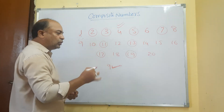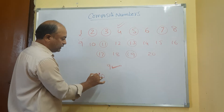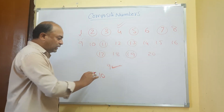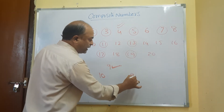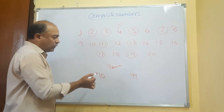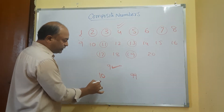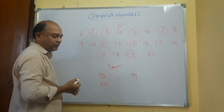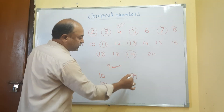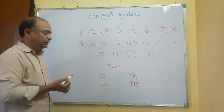The smallest two-digit composite number is 10. The largest two-digit composite number is 99. The smallest three-digit composite number is 100. The largest three-digit composite number is 999.